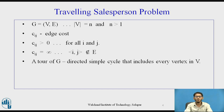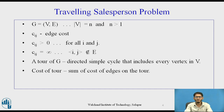A tour of the graph G is a directed simple cycle that includes every vertex in the set V. The cost of the tour is the sum of the costs of the edges on the tour, and our aim is to find the tour of minimum cost.